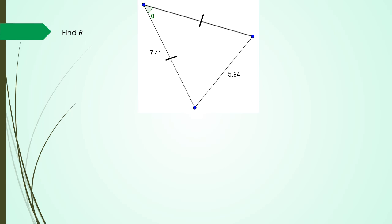The key thing to notice is those two little black lines in the triangle, which means you're working with an isosceles triangle. So this is 7.41, and this is also going to be 7.41. Let's label our sides: we have angle A, side a, side b, and side c.